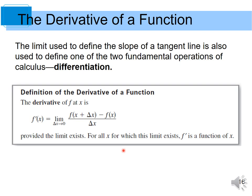The limit used to define the slope of a tangent line is also used to define one of the two fundamental operations of calculus: differentiation. The derivative of f at x is f prime of x, equal to the limit of f(x plus delta x) minus f(x), all over delta x, as delta x approaches 0, provided the limit exists. For all x for which this limit exists, f prime is a function of x.